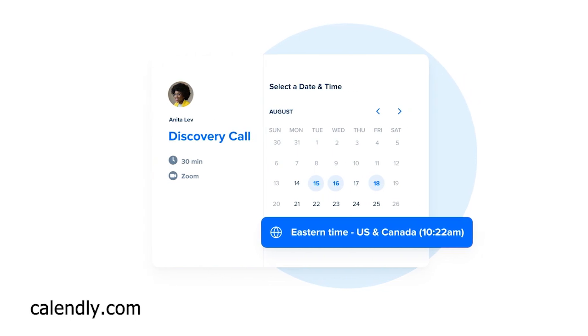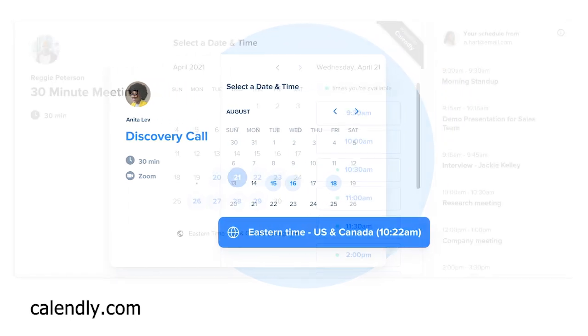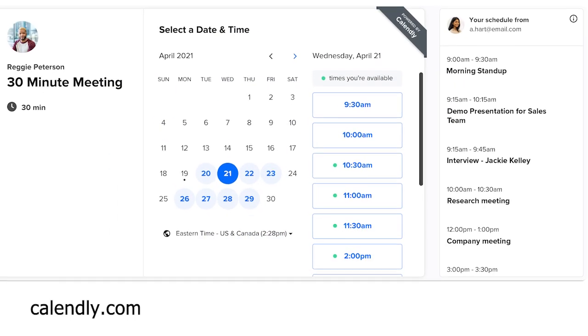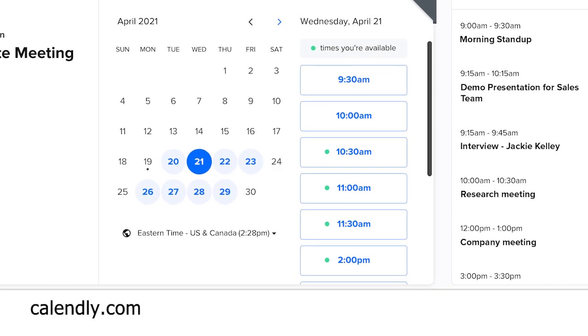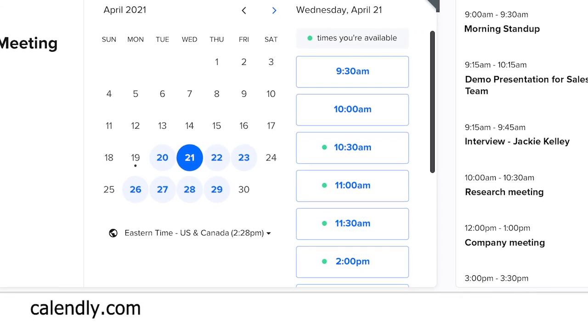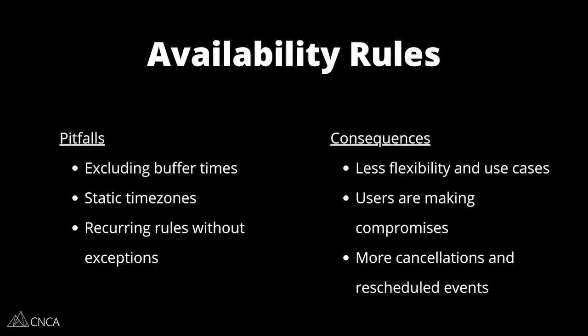There's a lot of logic that goes into building calendar systems — not to mention displaying all of this information and offering these preferences in a way that's intuitive for your users. Some of the most common pitfalls we see when it comes to creating availability rules in a scheduling app typically involve forgetting about all of these nuances.